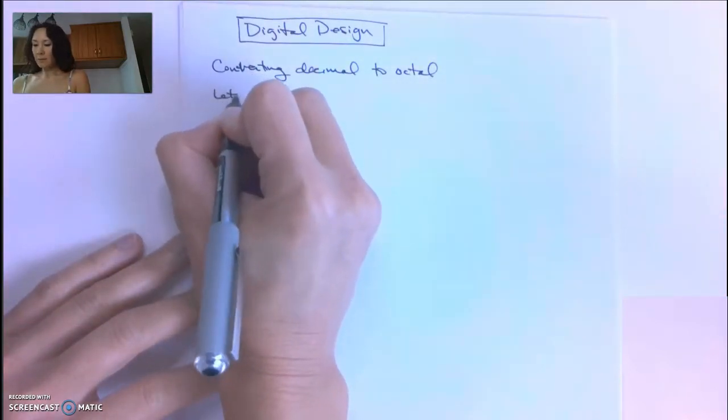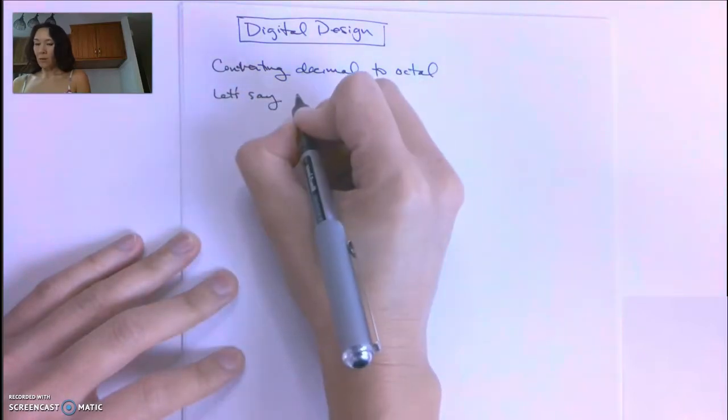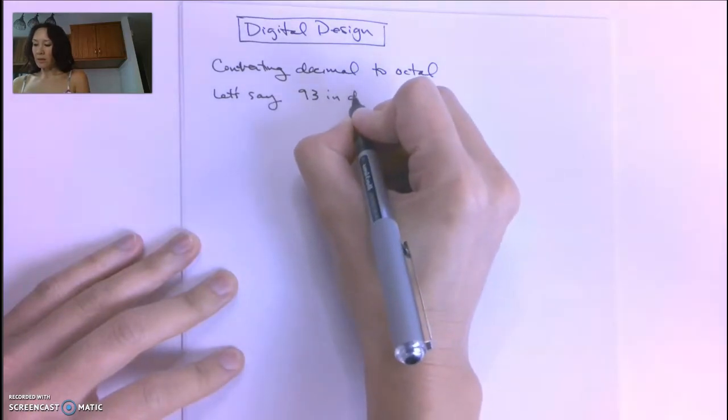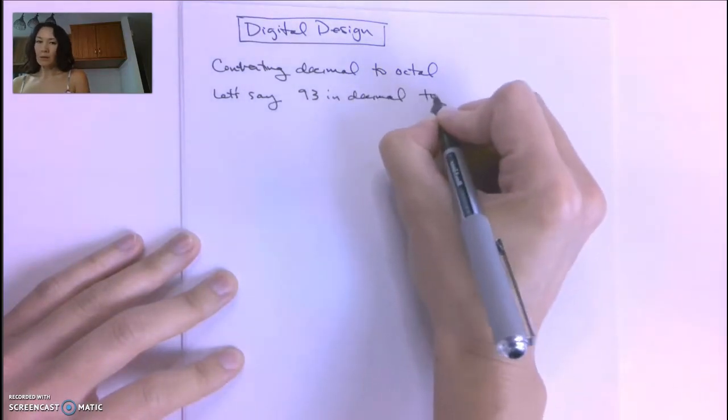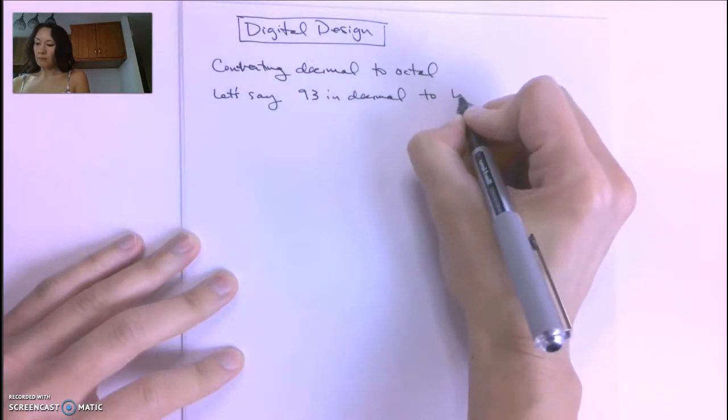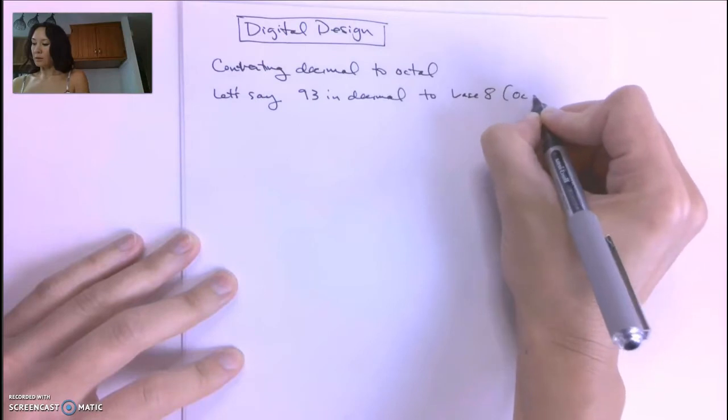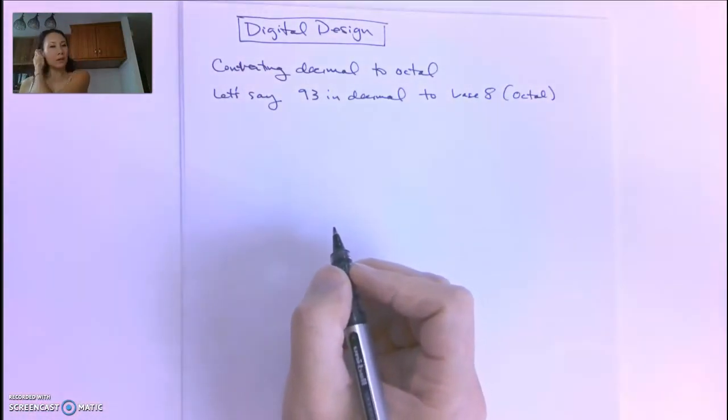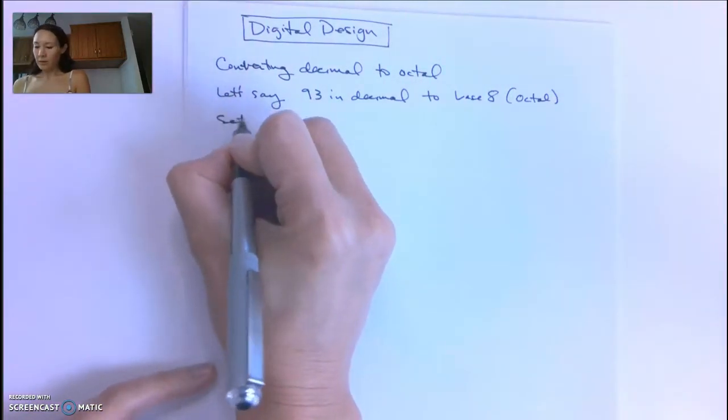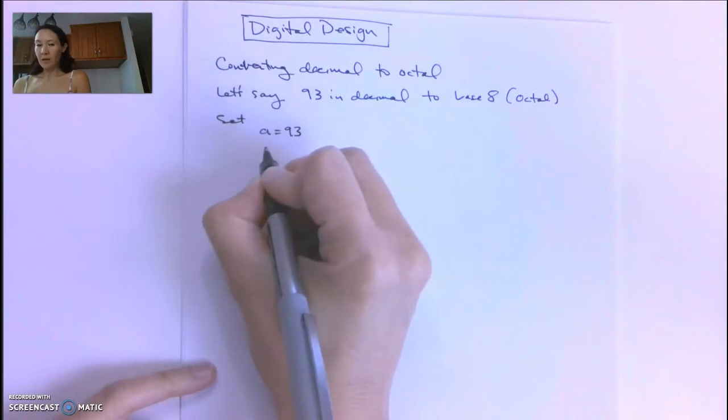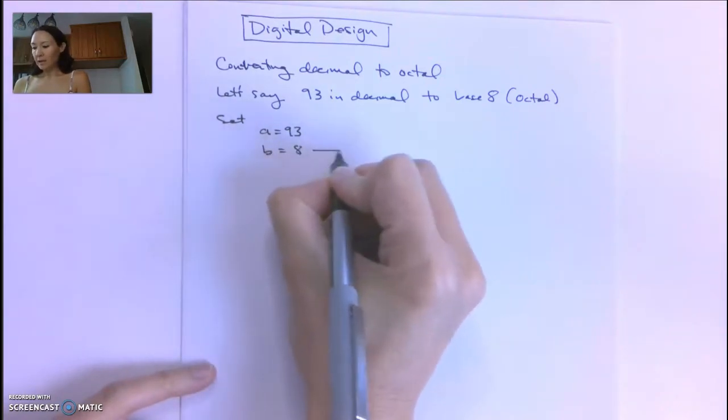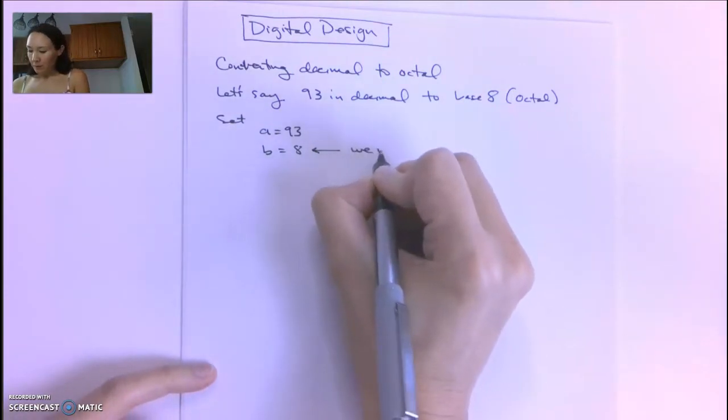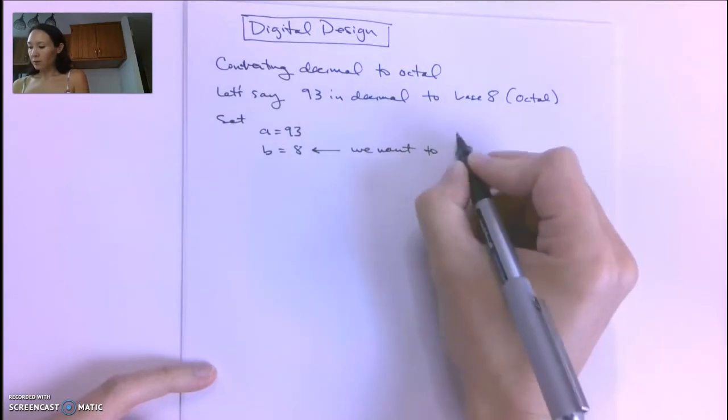We want to convert 93 in decimal to base 8, which is the octal number system. Following the iterative division algorithm, we set A equal to 93 and B equal to 8, because we want to convert to base 8.